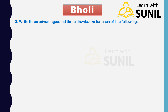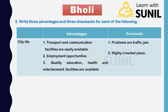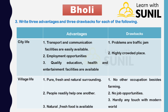Write three advantages and three drawbacks for each of the following. City life advantages: first, transport and communication facilities are easily available; second, employment opportunities; third, quality education, health and entertainment facilities are available. Drawbacks: first, traffic jams; second, highly crowded place. Village life advantages: first, pure, fresh and natural surroundings; second, people readily help one another; third, natural fresh food is available. Drawbacks: first, no other occupation besides farming; second, no job opportunities; third, hardly any touch with the modern world.